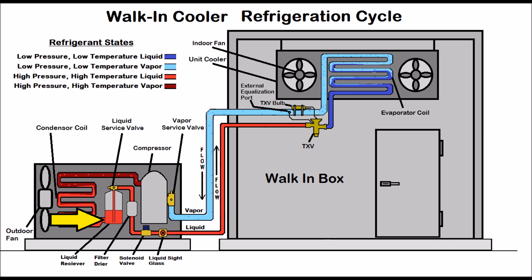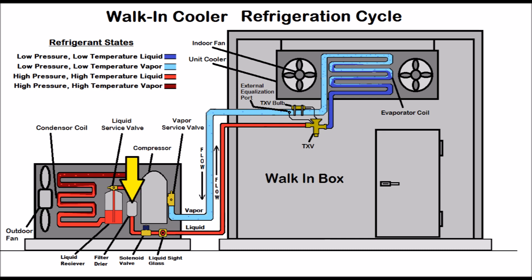The sub-cooled liquid gets sucked up through the liquid service valve on top of the receiver, then goes through the filter dryer. The filter dryer's job is to store any water vapor and contaminants, preventing water vapor from interacting with the refrigerant oil. If water vapor and refrigerant oil mix, it turns into alcohol and acids. So the sub-cooled liquid refrigerant heads through the filter dryer and then through the solenoid valve.